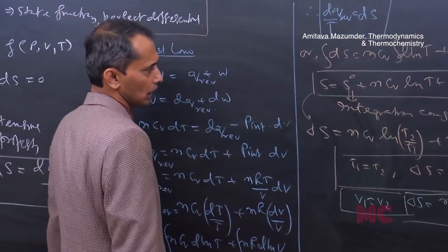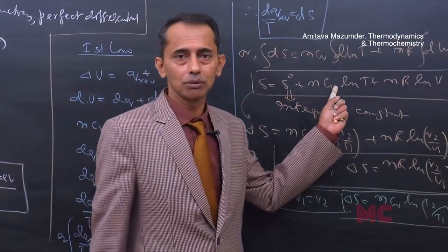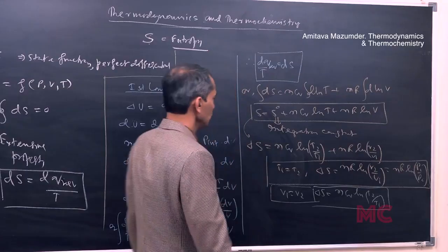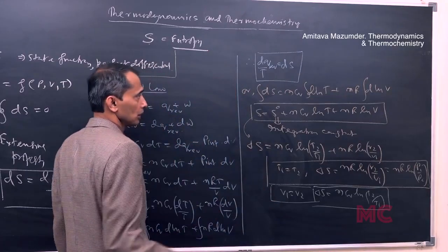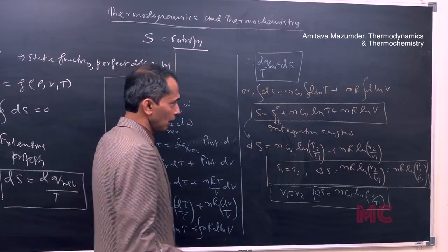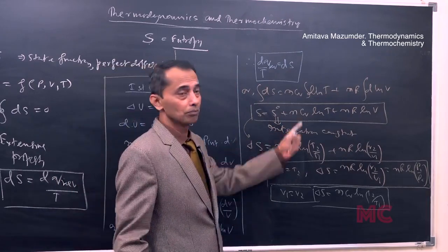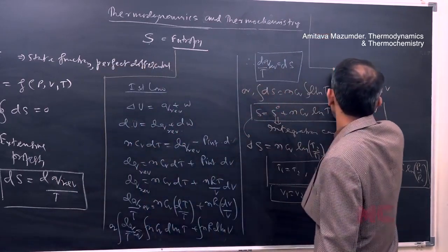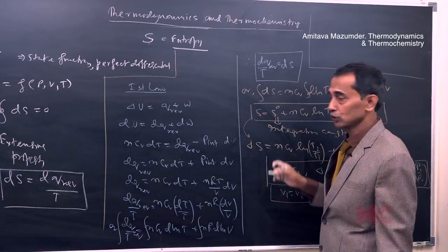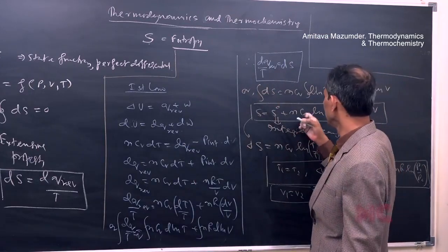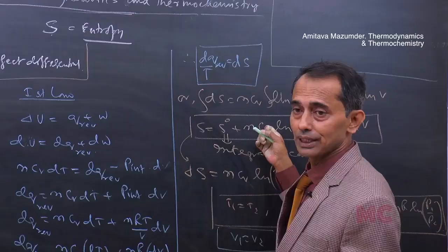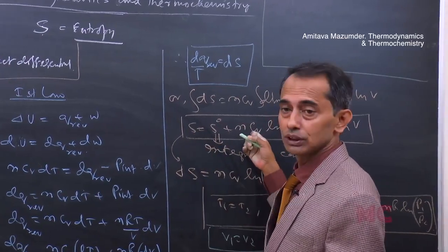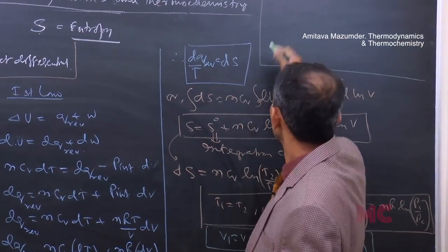If the process happens at constant pressure, we cannot use Cᵥ in the equation. This may appear in difficult or school-level problems: for a constant pressure process we cannot have Cᵥ, so we need to modify the equation.